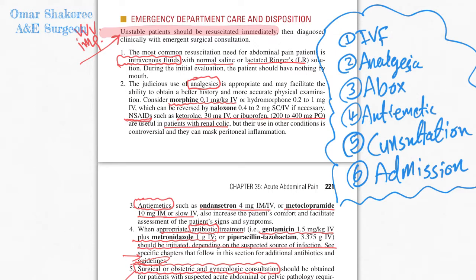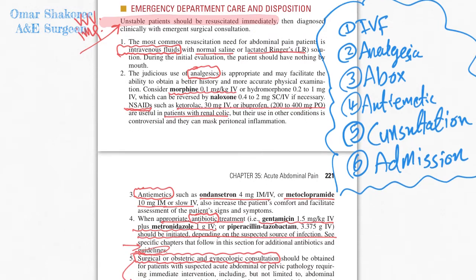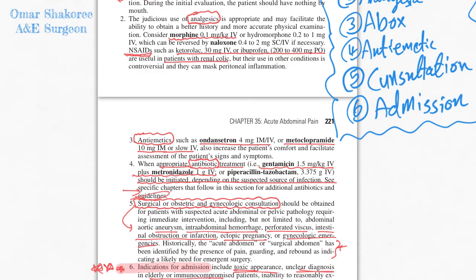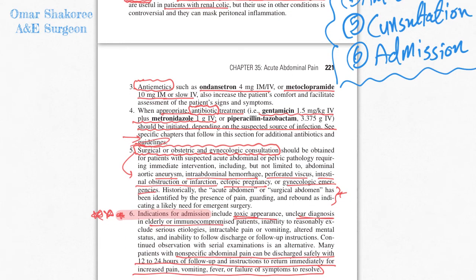The appropriate antibiotic for acute abdominal pain is gentamicin plus metronidazole. After that, you have to arrange a surgical, obstetric, and gynecological consultation accordingly. There are also some indications for admission — for example, patients who have a toxic appearance must be admitted to the hospital.